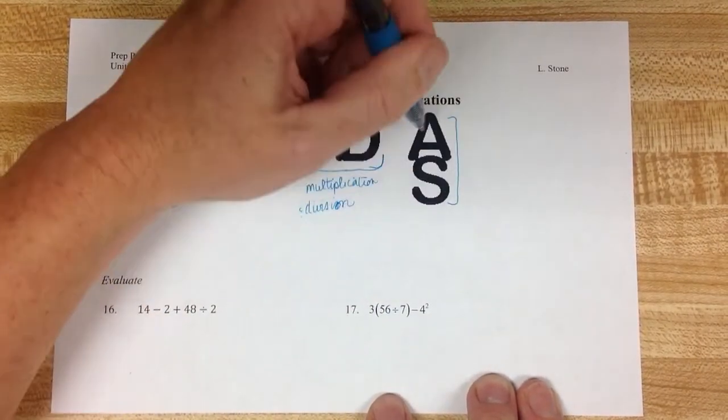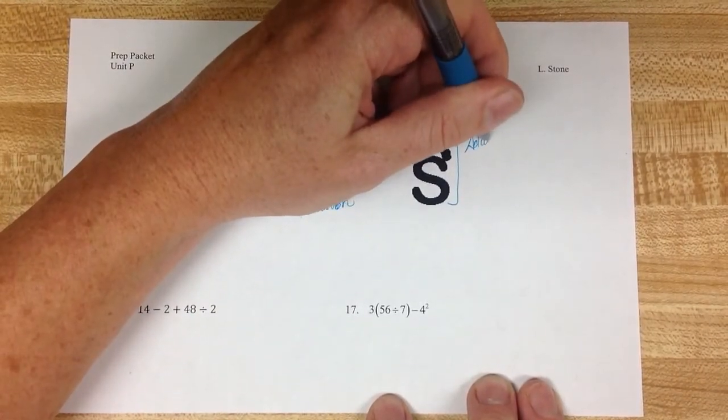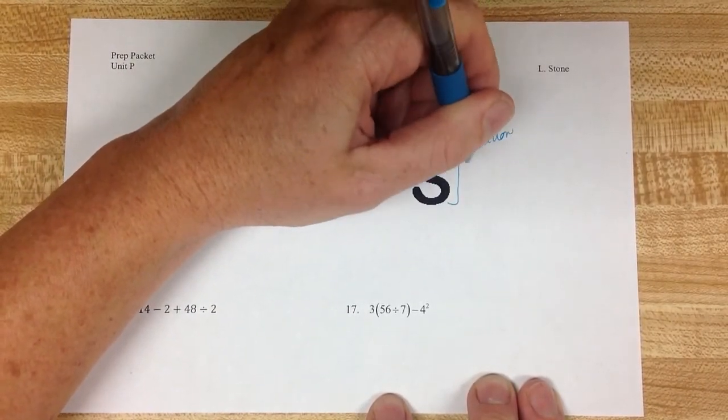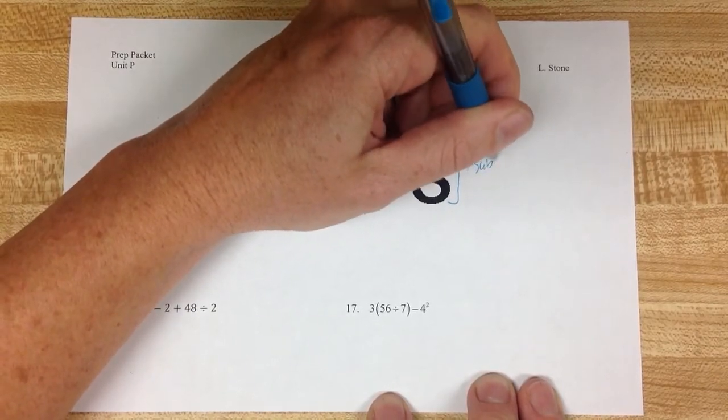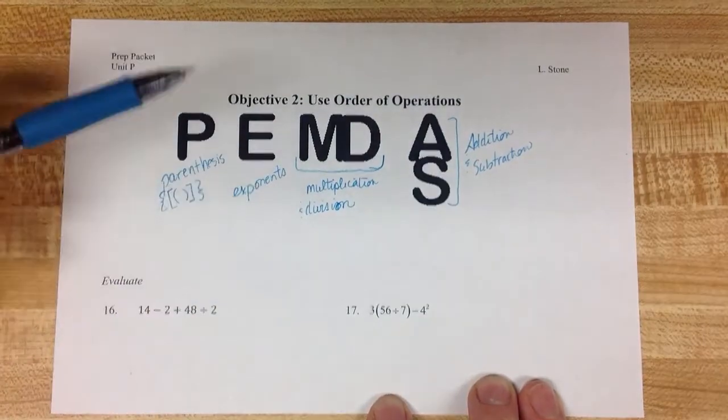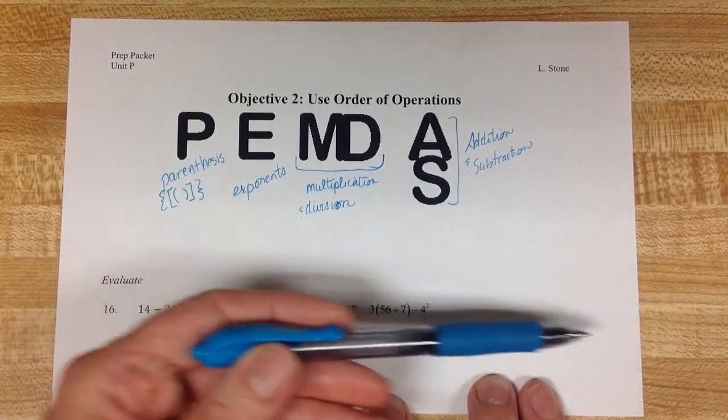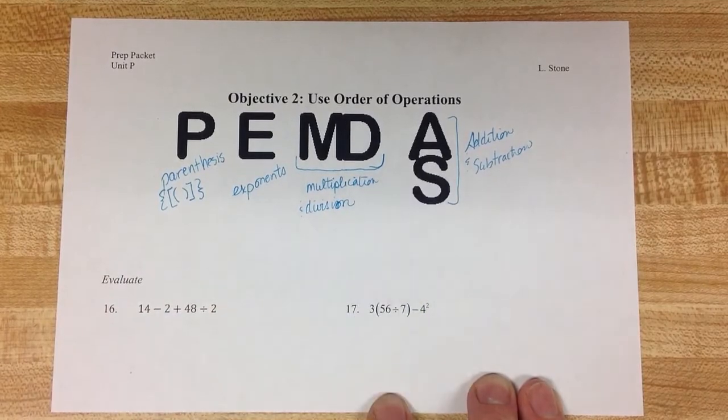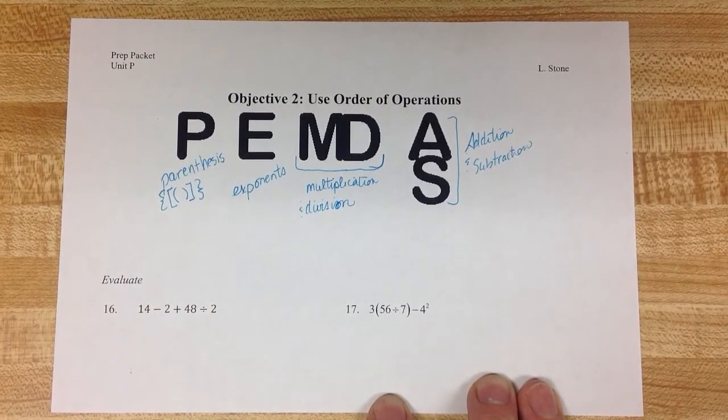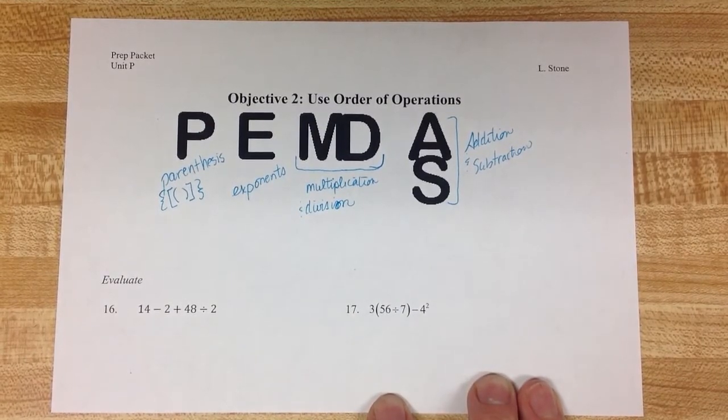If you haven't guessed it already, the AS stands for addition and subtraction. And the same rule applies there, that whichever one you see first as you're reading through the problem is the one you need to do first. So if addition appears first, you do the addition first. If subtraction appears first, you do the subtraction first.